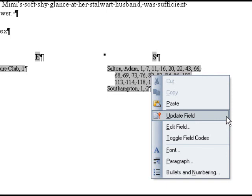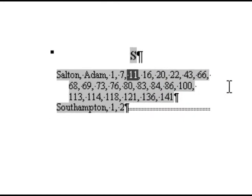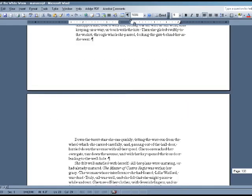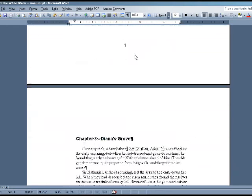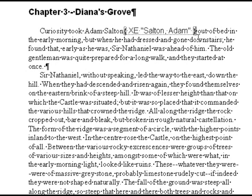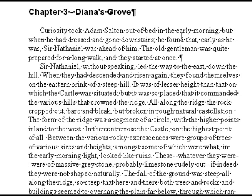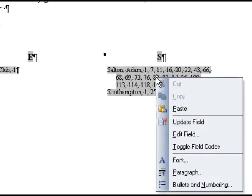Instead, you will want to insert additional entries the way we've already covered, or remove them the following way. Let's pretend one of the Adam Salton entries — the one on page 11 — needs to be removed. Rather than deleting the entry in the index itself, go to page 11 of your manuscript and make sure you are in Show Formatting mode so that you can see the script tags. Find the script tag you want to remove and delete it. Then go back to your index at the end of the manuscript, right click on it, and select Update Field.